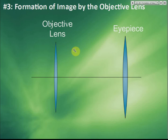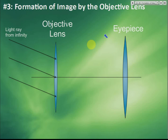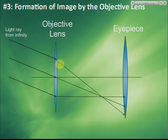Now, image formation by the objective lens. An astronomical telescope is used to see objects very far away, like celestial bodies — moons and stars. Light from very far away is always parallel, coming from infinity. These parallel light rays are refracted and focus at the principal focus of the objective lens.